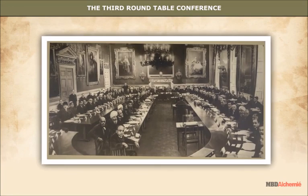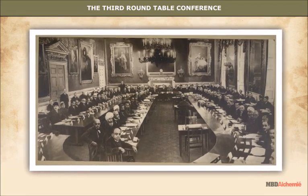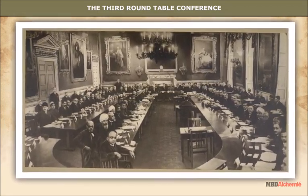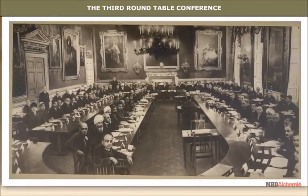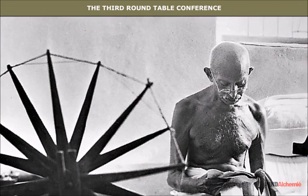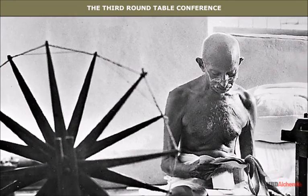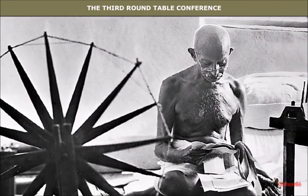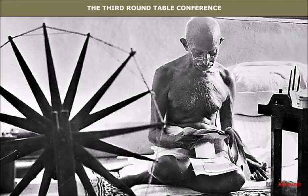The Third Round Table Conference: In 1932, the Third Round Table Conference was held in London, where it announced the controversial communal award. Gandhiji re-launched the civil disobedience movement, but by 1934 it had lost its vigour and momentum.